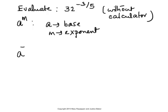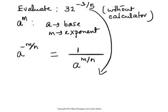In the expression a to the negative m divided by n, the exponent is a negative rational number. Such an expression can be rewritten as 1 divided by a to the power m over n, thus making the exponent a positive rational number. This can be done under the assumption that a to the m over n is a non-zero number, since division by zero is undefined. Keeping this concept in mind, we write 32 to the power negative three-fifths as 1 over 32 to the power positive three-fifths.